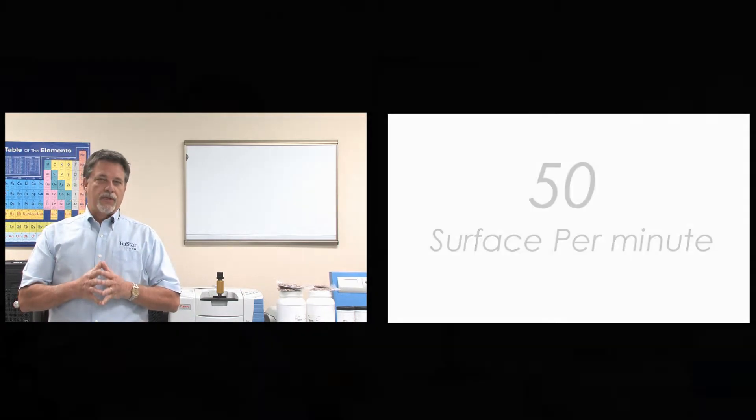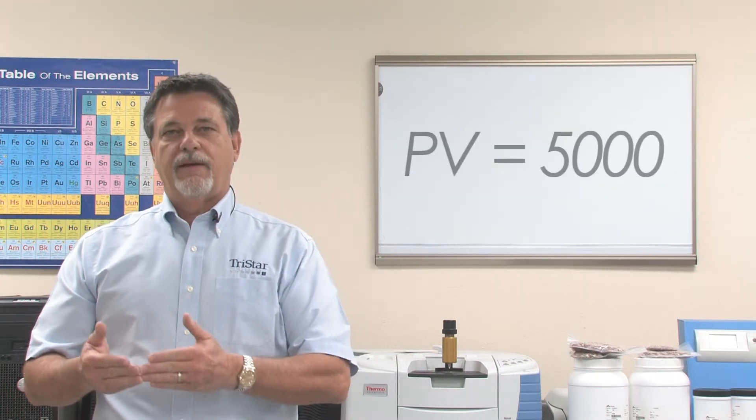So for this particular example, we have a 50 feet per minute speed. We have our P, we have our V, you multiply them together, and you now have your PV. In this case, 5,000.